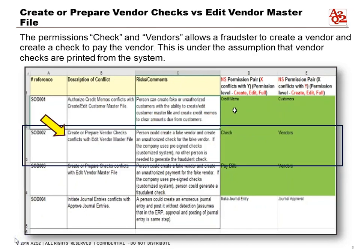The second rule is create or prepare vendor checks vs. the edit vendor master file. The permissions for check and vendors allow a fraudster to create a vendor and create a check to pay that vendor. This is under the assumption that vendor checks are printed from the system. If checks are physically held somewhere else, you also want to be careful that the person holding the check can't also create vendors, because then they can make unauthorized payments.